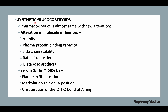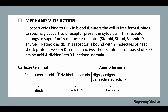For synthetic glucocorticoids, the pharmacokinetics are almost the same with a few alterations. Alteration in the molecule influences affinity, plasma protein binding capacity, side-chain stability, and rate of production and metabolic products. The serum half-life is increased by about 50 percent.